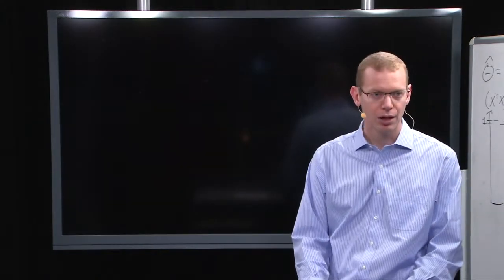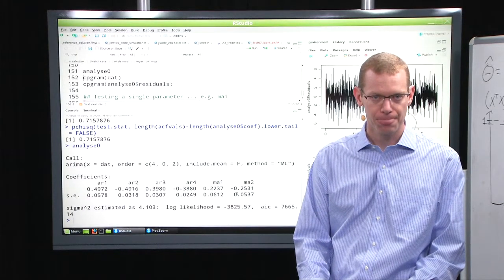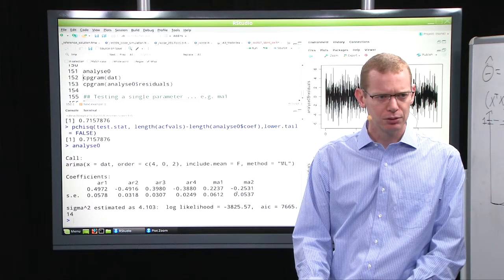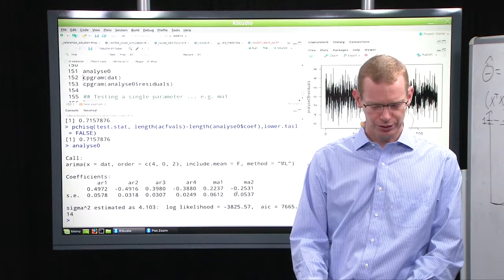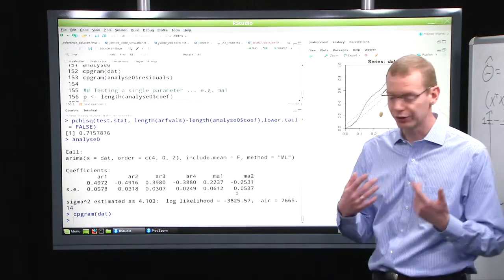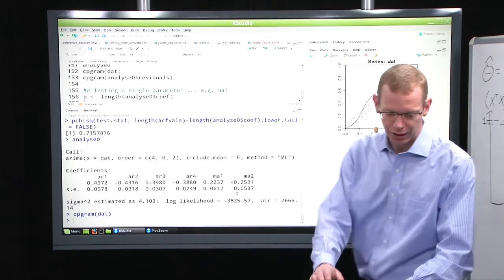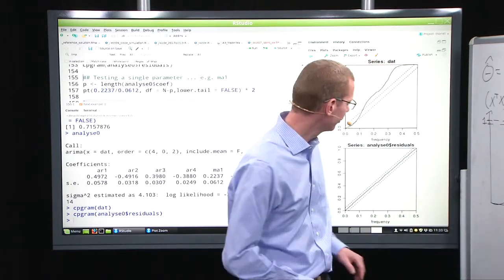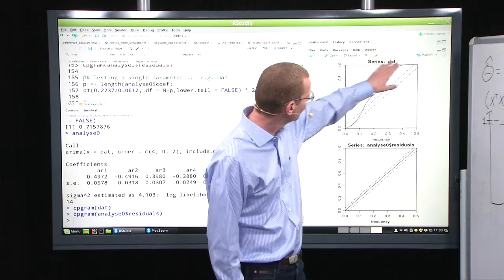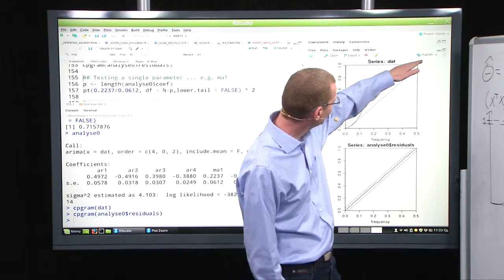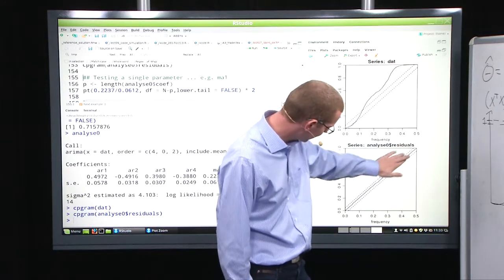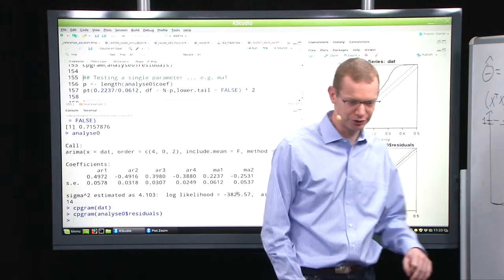Now, what we will also do is to look at the cumulative periodogram. First, just for the data, just to see what it looks like. And then we will do it for the residual as well and see that for the data, what we have an over-representation of some higher frequencies, whereas for the residuals, everything is well within the confidence interval.